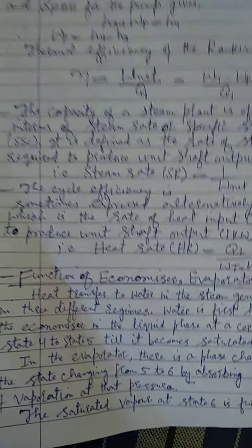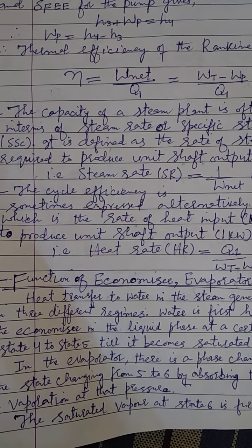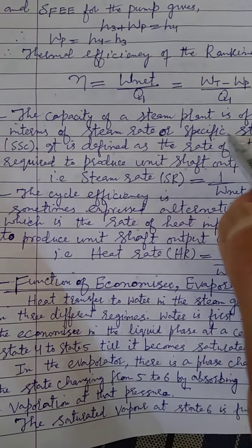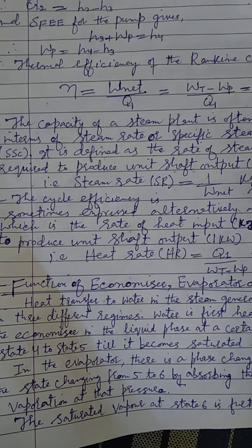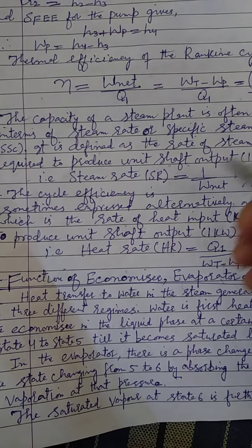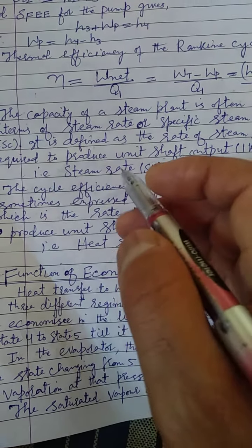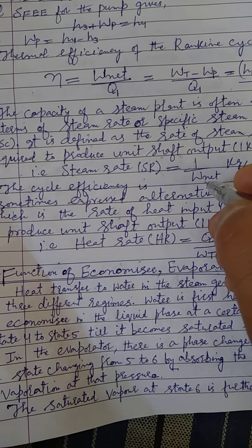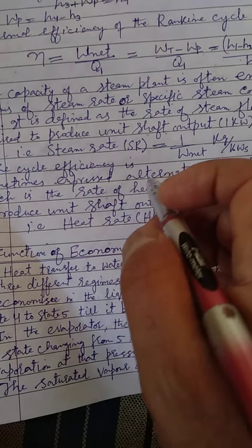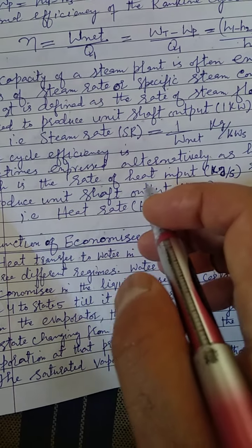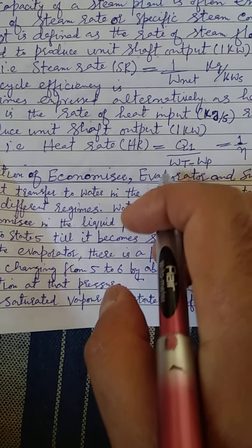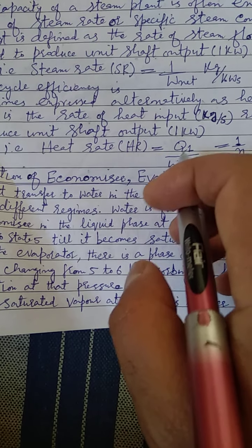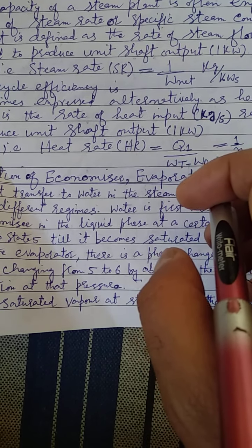Sometimes we need to express the capacity of a steam power plant. The capacity is often expressed in terms of steam rate or specific steam consumption (SSC), defined as the rate of steam flow in kg per second required to produce unit shaft work of one kilowatt. Steam rate SR equals 1 divided by net work done in kg per kilowatt-second. Cycle efficiency is also expressed as heat rate, which is the heat input required to produce one kilowatt of shaft output, equal to heat input divided by net work done. Heat rate is the reciprocal of thermal efficiency.